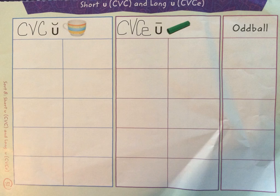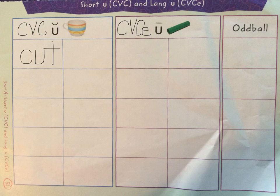Let's do an example. Let's take the word 'cut.' Find your word card 'cut' and place it under the short vowel U, because we know it makes the 'uh' sound. When we look at the word 'cut,' we have our consonant, our vowel which is U, followed by a consonant. I cut my hair this weekend.